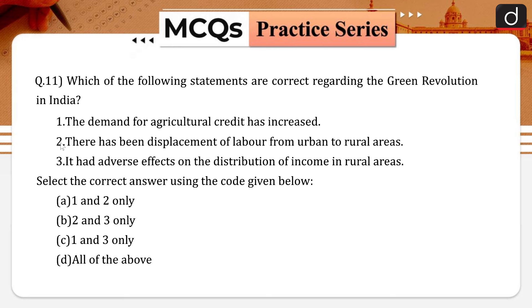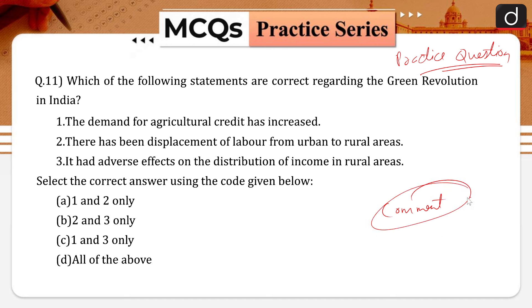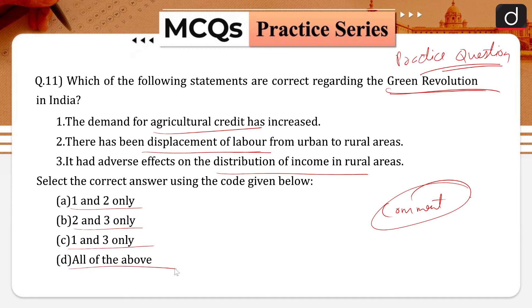Now, this is the practice question — you will give the answer in the comment section. Which of the following statements are correct regarding the Green Revolution in India? First, the demand for agricultural credit has increased. Second, there has been displacement of labor from urban to rural areas. Third, it had adverse effects on the distribution of income in rural areas. Options: 1 and 2 only, 2 and 3 only, 1 and 3 only, or all of the above.